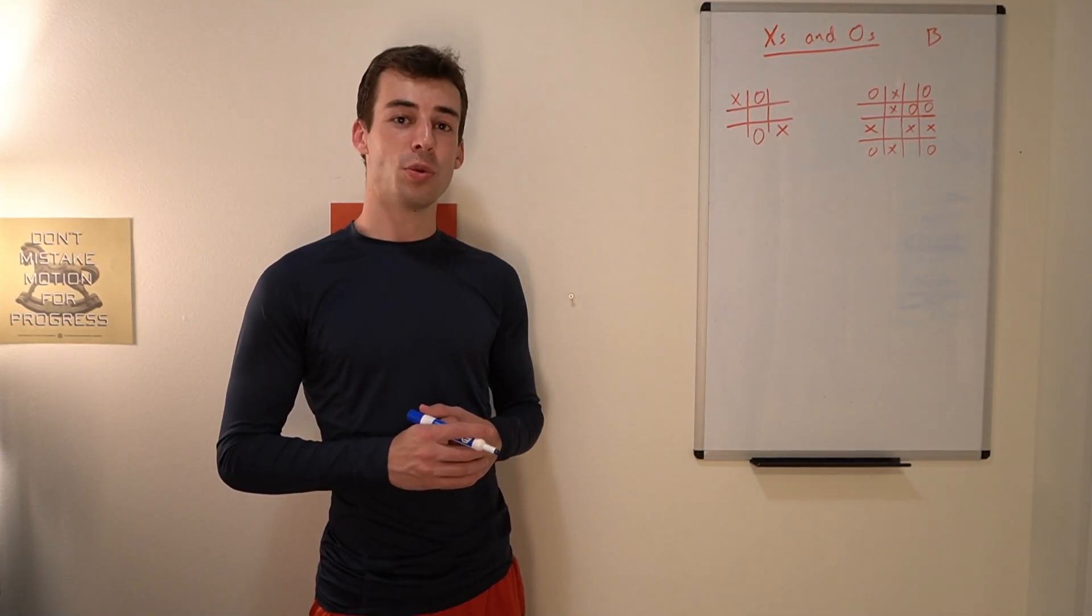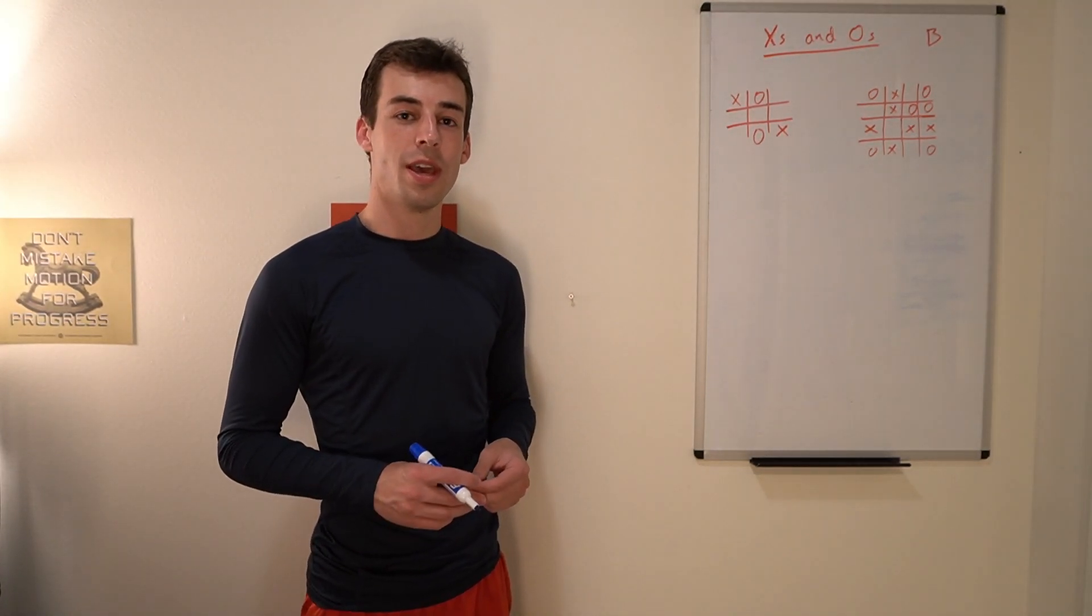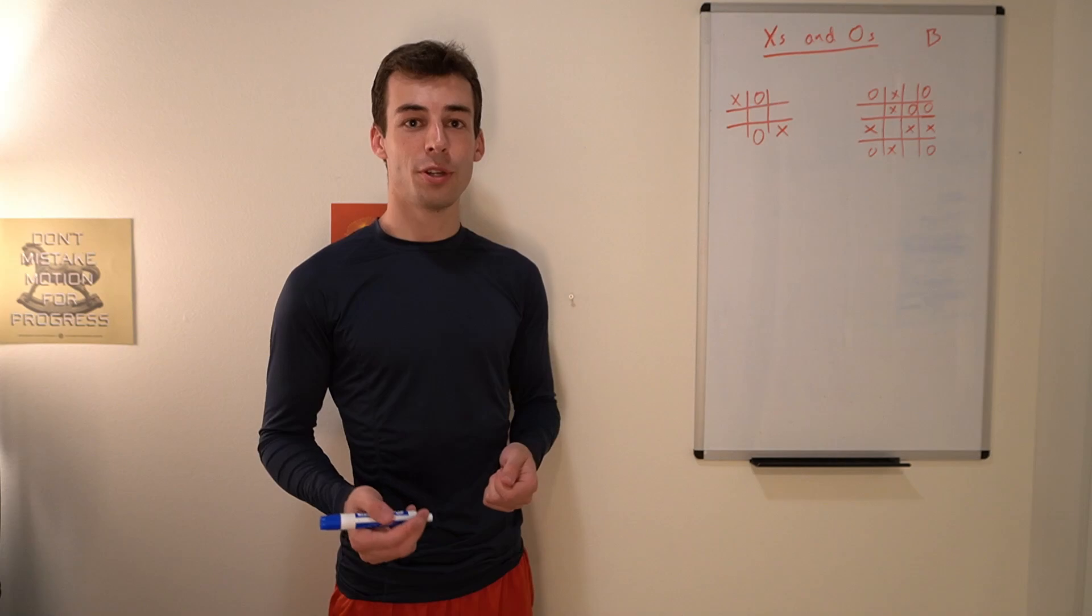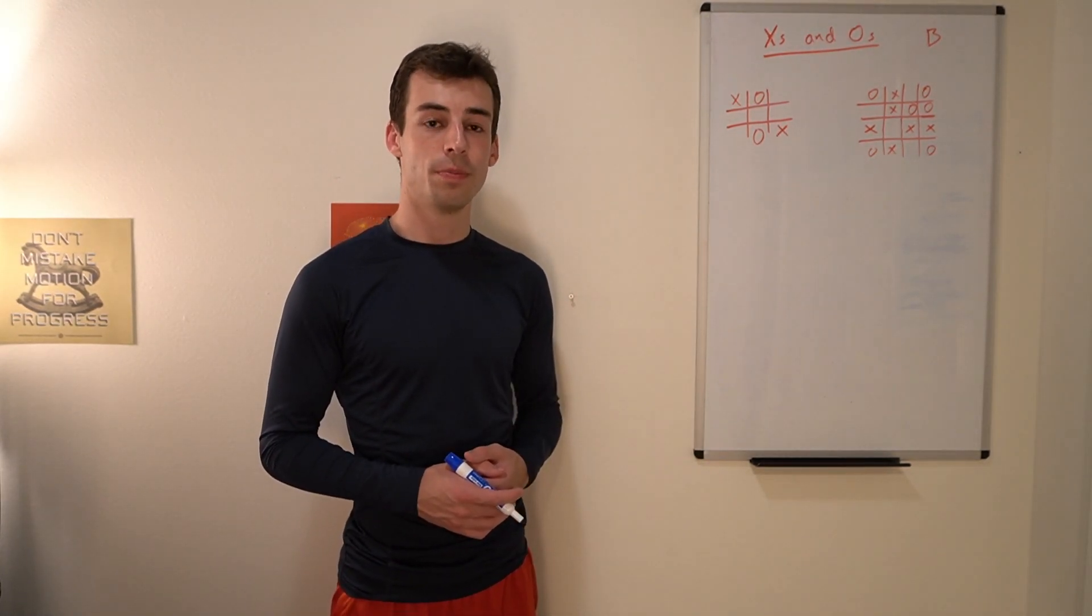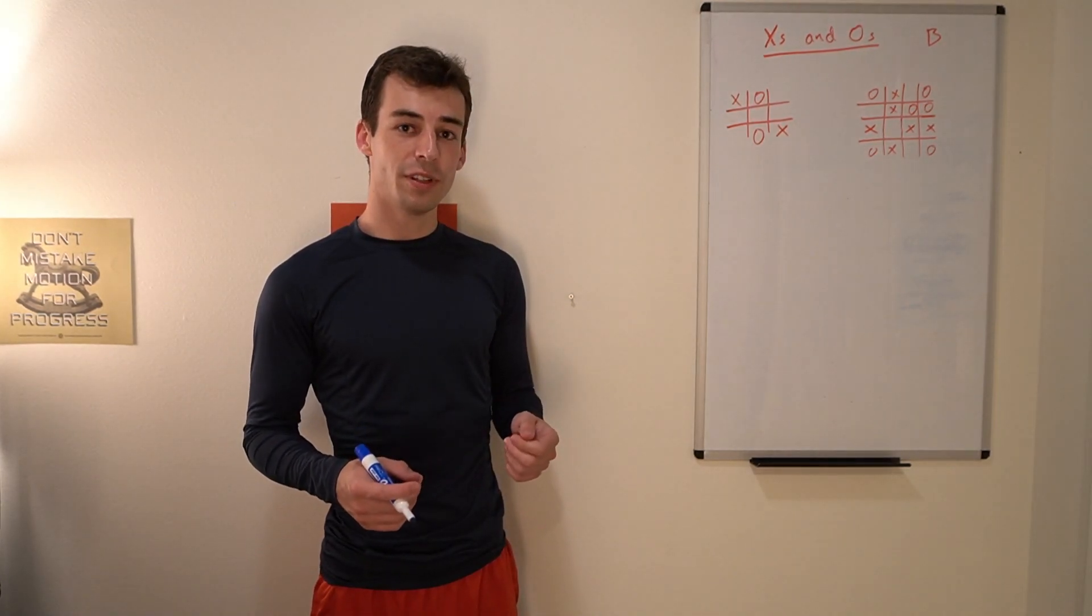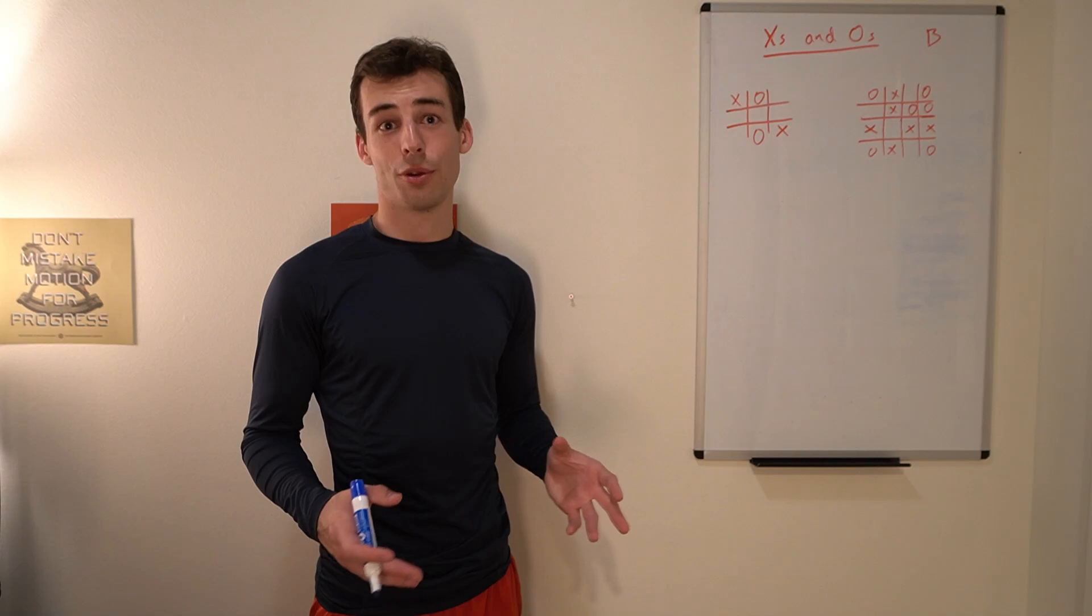In it we're given an n by n grid which has some X's and some O's and then some empty squares. The goal is we're having a two player game in which you're playing as X and your opponent is playing as O. The goal is to fill in either some row or some column all with either X's or O's.